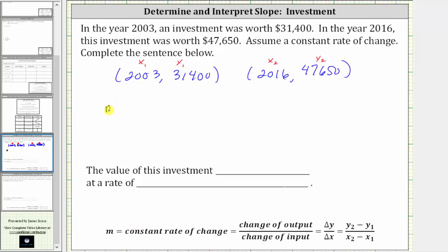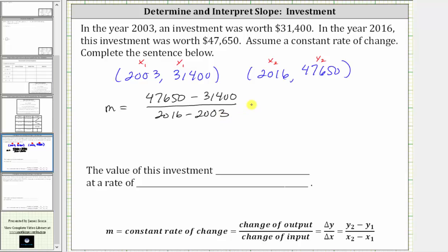So the constant rate of change m is equal to y sub two minus y sub one, which is the change in the investment worth — $47,650 minus $31,400 — divided by the change in x, or the change in years, which is 2016 minus 2003. That gives us 16,250 dollars in the numerator and 13 years in the denominator.